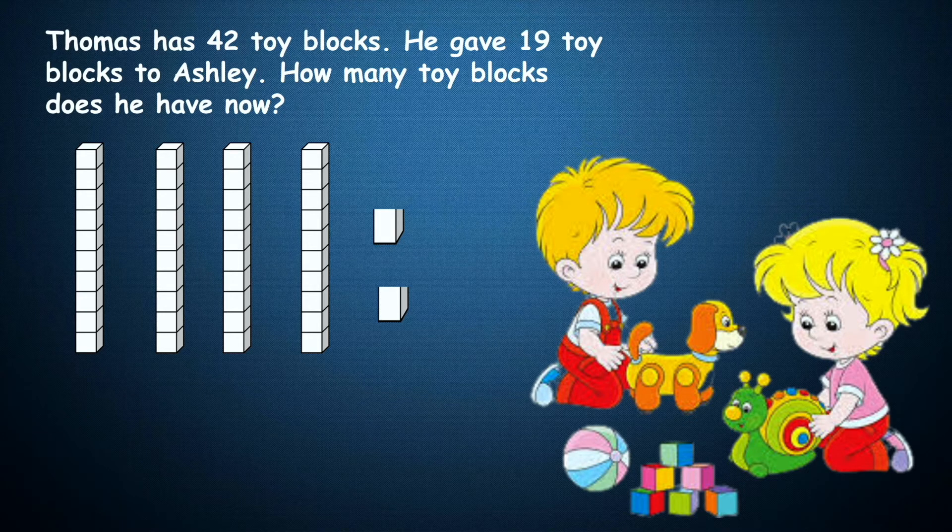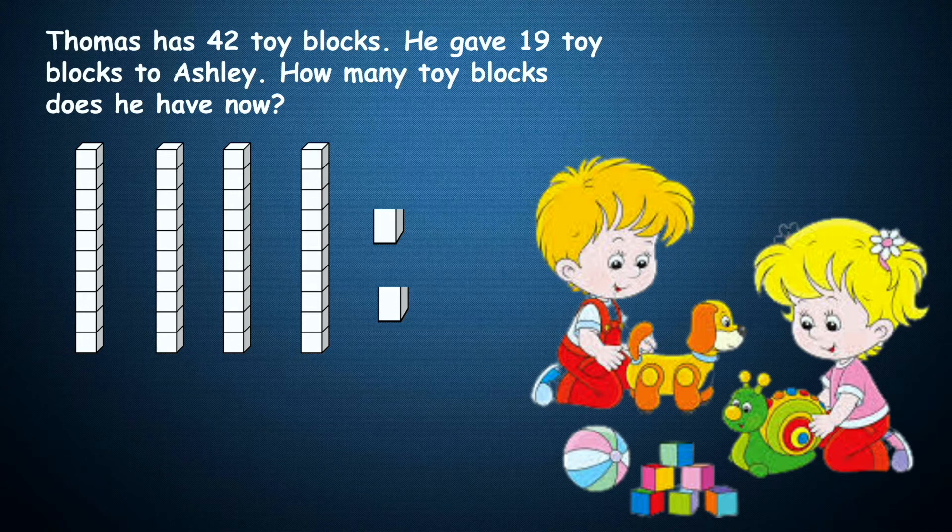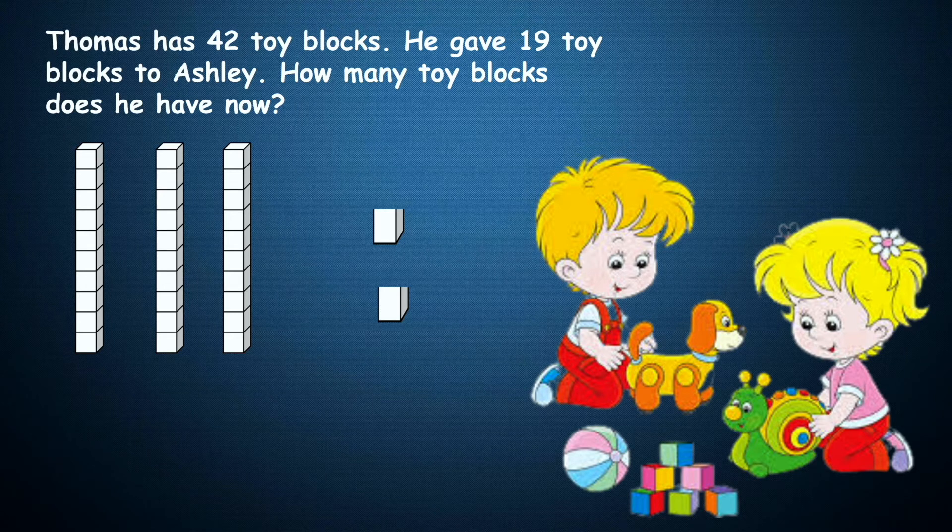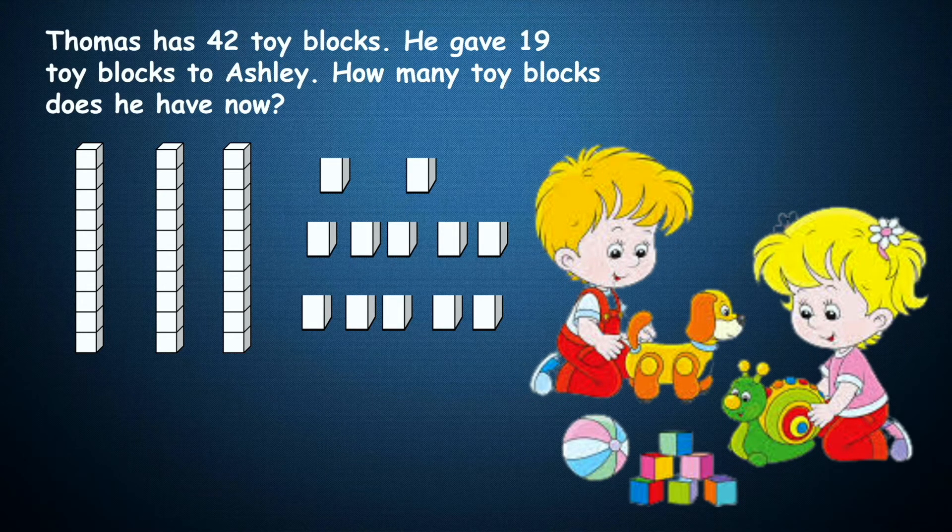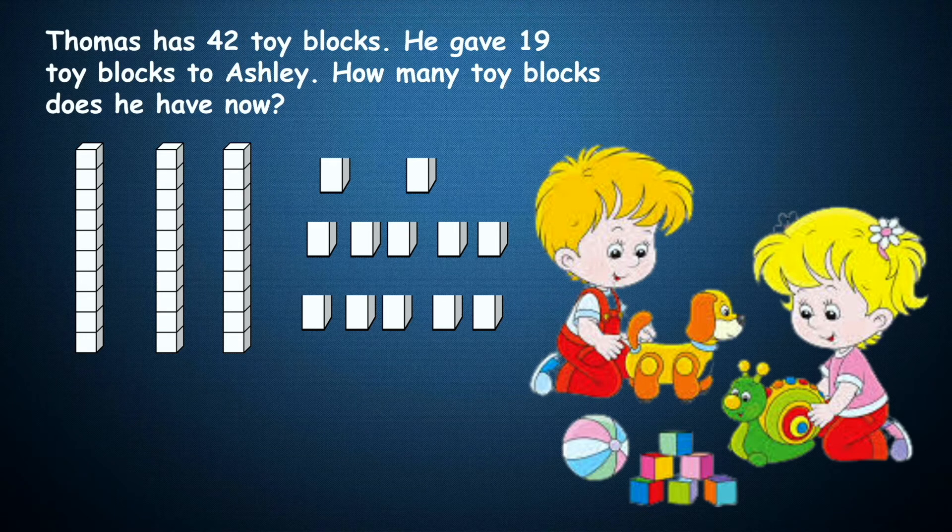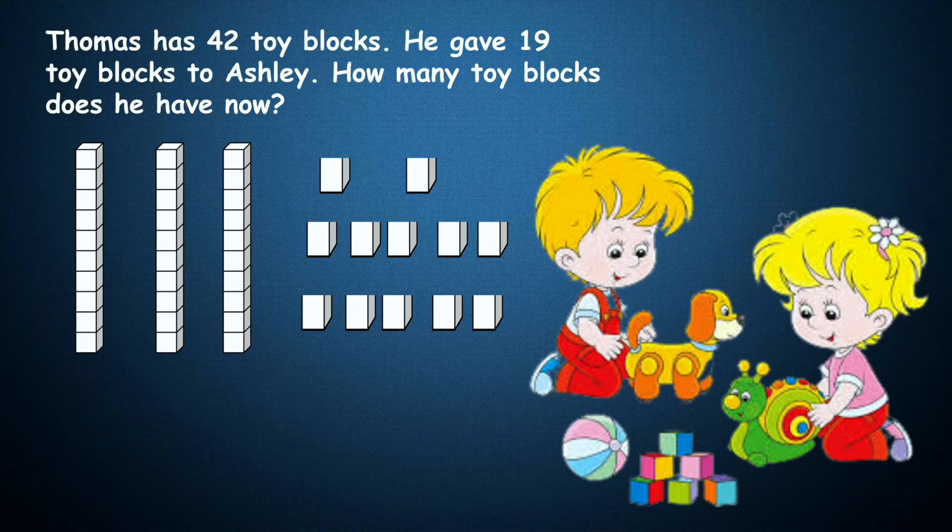That means we have to regroup one ten into ten ones. So let's try that. We're going to take away that one ten and we are going to regroup into ten ones. So this is still the same 42. We have three tens now and we have twelve ones which makes 42.